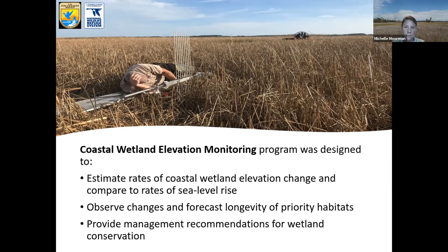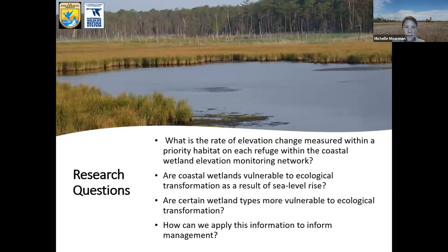We wanted to know if coastal wetlands were gaining elevation at a rate that could pace with sea level rise. The coastal elevation monitoring network was designed with three purposes: first, to estimate rates of coastal wetland elevation change within a priority habitat on each refuge; second, to observe changes and forecast the longevity of these priority habitats; and third, to provide management recommendations for wetland conservation. Today I'm addressing four research questions: the rate of elevation change on each refuge, whether coastal wetlands are vulnerable to ecological transformation from sea level rise, whether certain wetland types are more vulnerable, and how to apply this information to inform management.